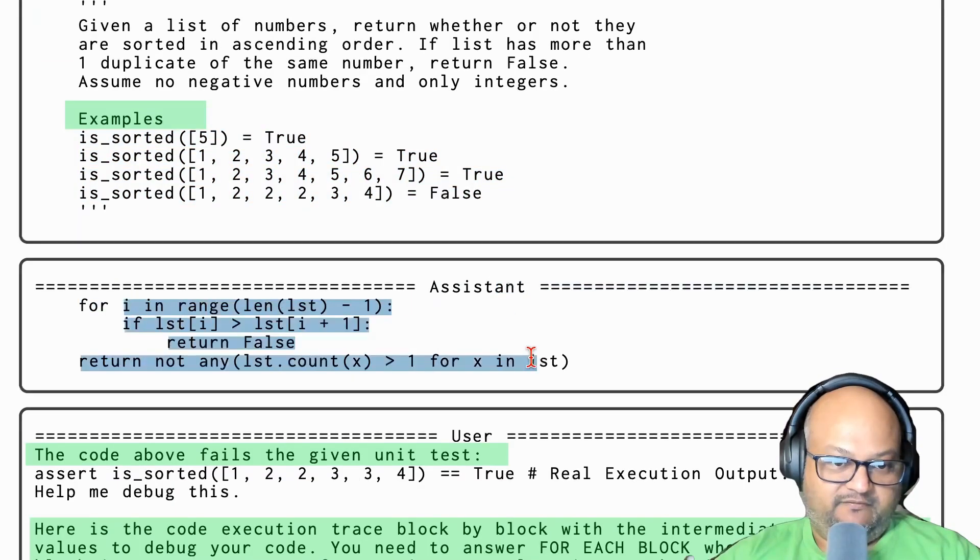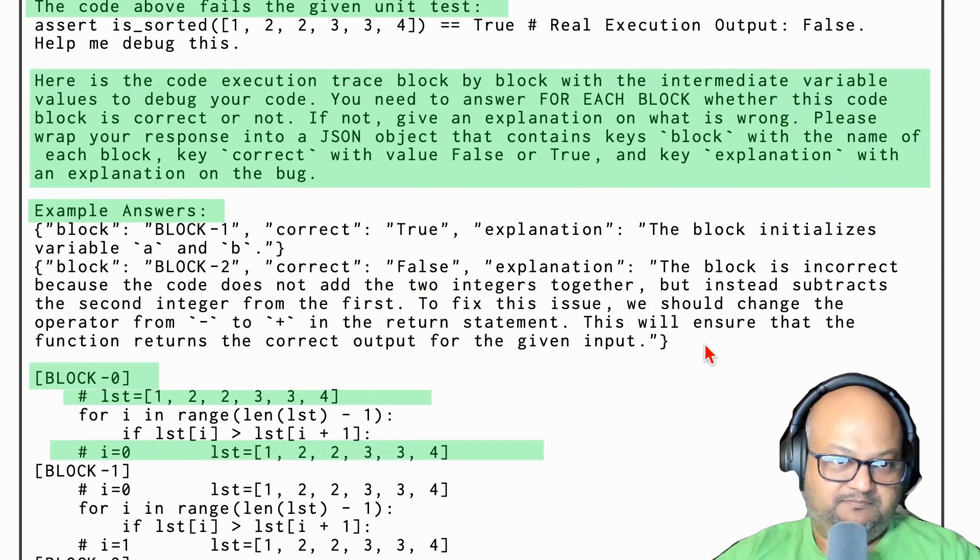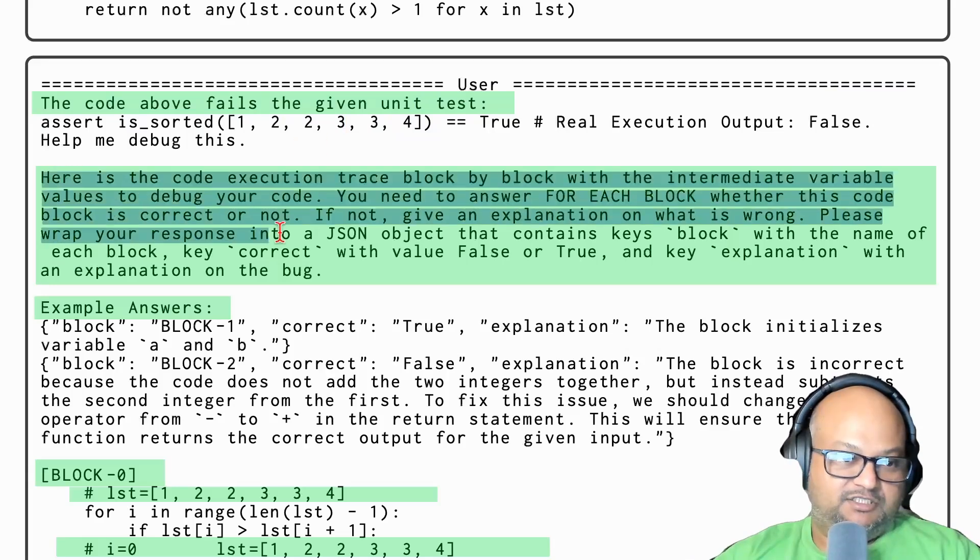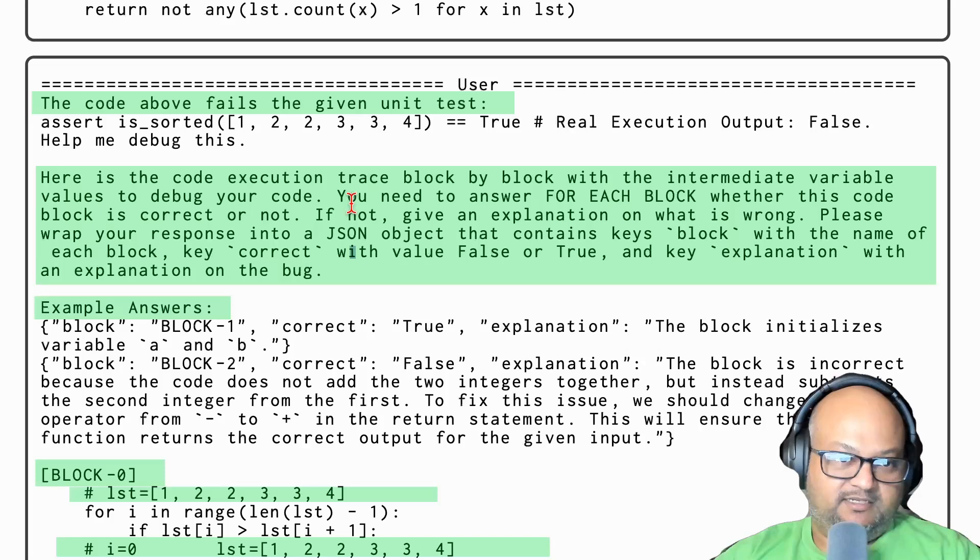Then you give a number of test cases to check against. Here you see the very first reply from the LLM. Then you run your tests and see that it fails one of them. Here's the prompt that you construct. You give it the failed test case. This chunk is the prompt, which tells the LLM that you're giving it a block by block execution trace. You're asking the LLM for each block if the code in that block is correct or not, and if not, give an explanation for what is wrong.